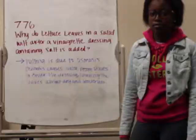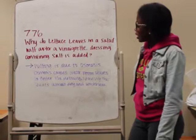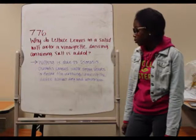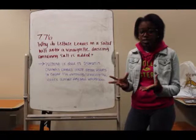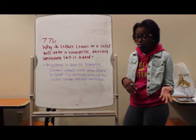For problem 7.76, the question asks: why do lettuce leaves in a salad wilt after a vinegar dressing containing salt is added? This happens because of osmosis. Lettuce leaves are full of water, and when you put vinegar dressing on them, the water from the leaves transfers to the vinegar.